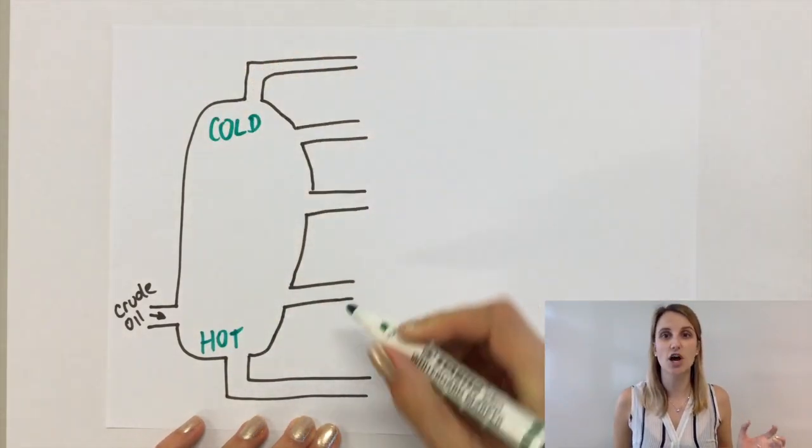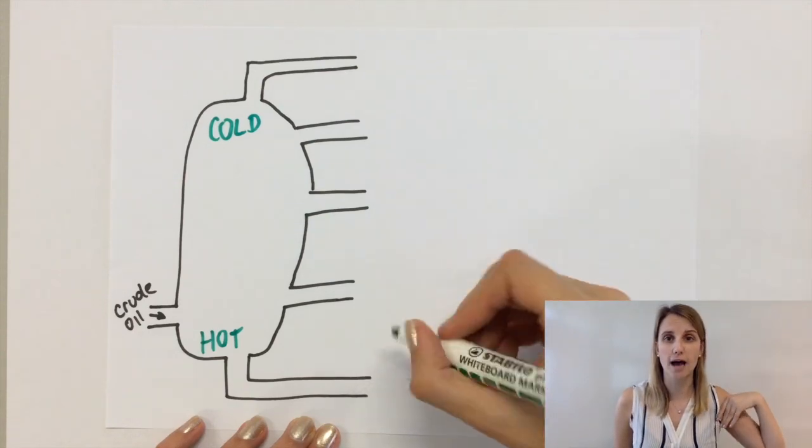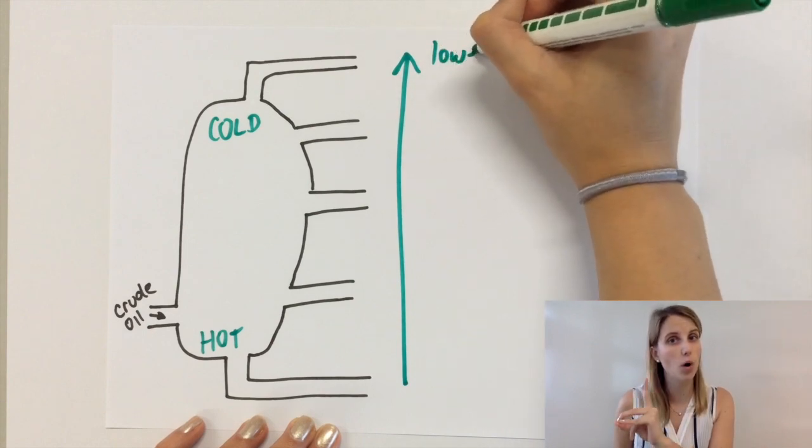From the previous video we talked about how the bottom is super hot and the top is much colder, and this means they get separated by boiling points, which is property number one.